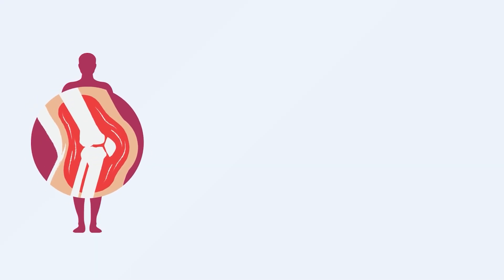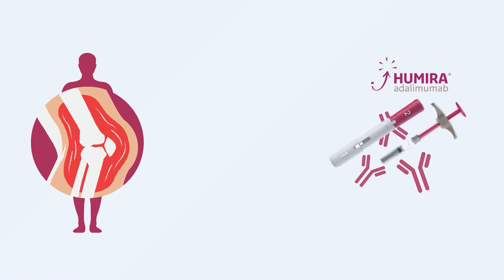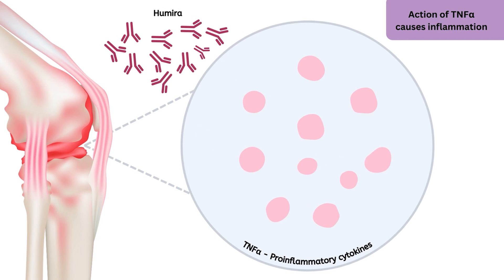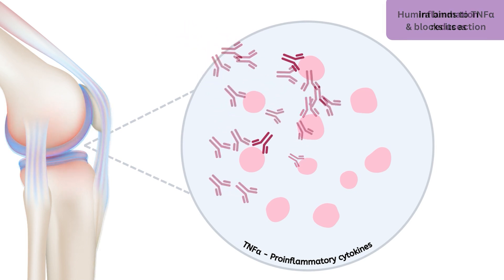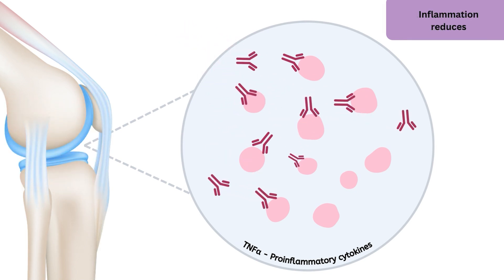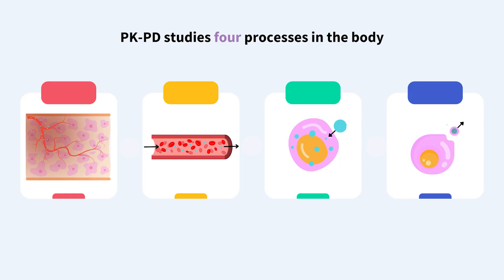As a biologist, my job is to understand the dynamic relationship between the human body and drugs in different disease scenarios. In this case, we tried to understand the relationship between Humira and rheumatoid arthritis. Rheumatoid arthritis is an autoimmune disease where inflammation affects the bone joints. Humira is a monoclonal antibody therapy approved for its treatment — it targets TNF-alpha, an important pro-inflammatory cytokine, bringing down its levels. PKPD studies four processes: absorption, distribution, metabolism, and elimination.